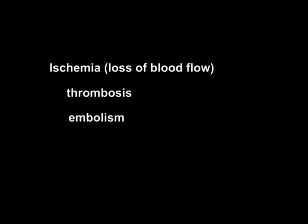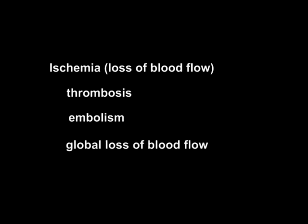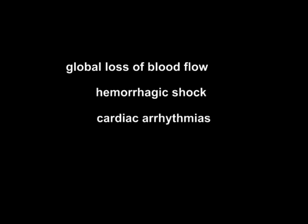Among the causes of ischemic stroke in the human brain is global loss of blood flow. Global blood flow loss may occur in any condition in the body in which there is a generalized loss of blood flow to all organs. Conditions which can lead to global blood flow loss include severe loss of blood volume as in hemorrhagic shock, rhythm disturbances of the heart such as ventricular fibrillation or cardiac arrest, infectious states with blood-borne infection, also known as septicemia, and narcotics overdose.